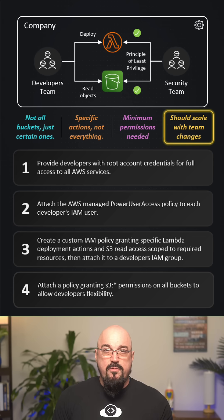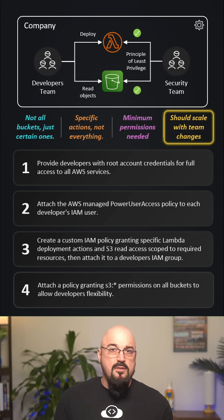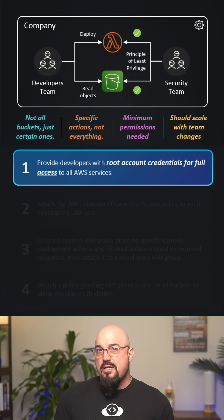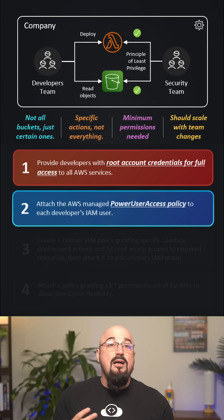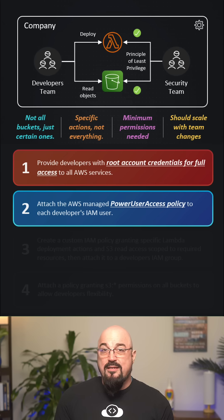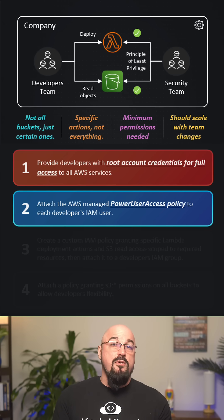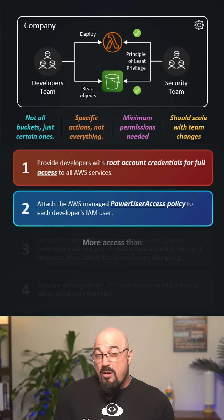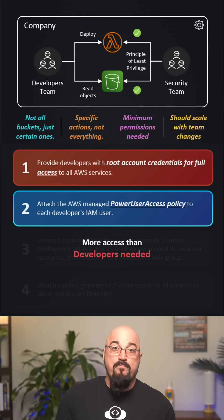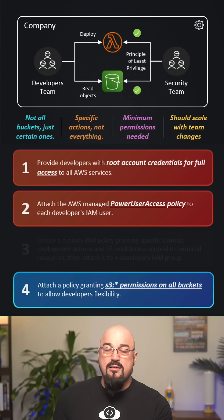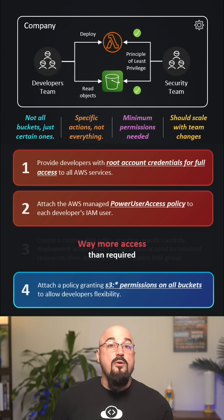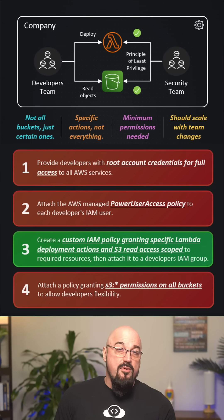The hint says least privilege, so anything with full access or all services is pretty much immediately out. Option one — root credentials give access to everything; this is the opposite of least privilege and a major security violation. Option two — Power User Access grants broad permissions across many services, probably more than developers need. Option four — S3 star on all buckets ignores the requirement for specific S3 buckets, way more access than required. So the correct option is option three.